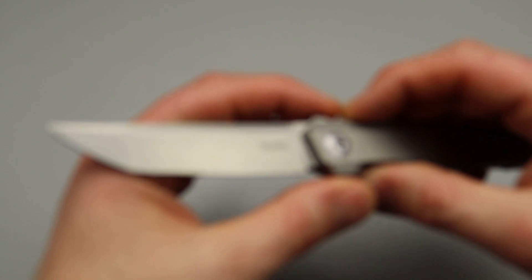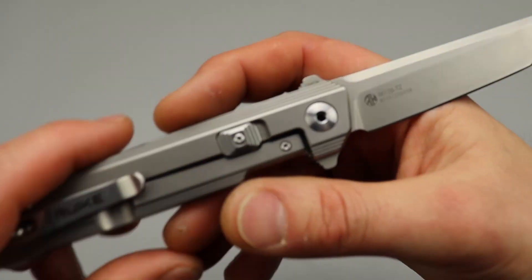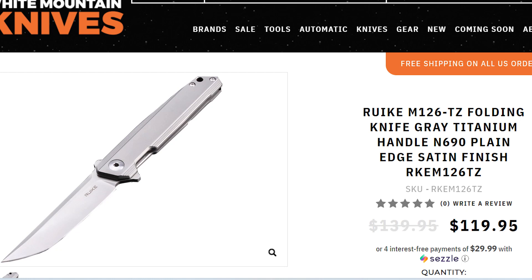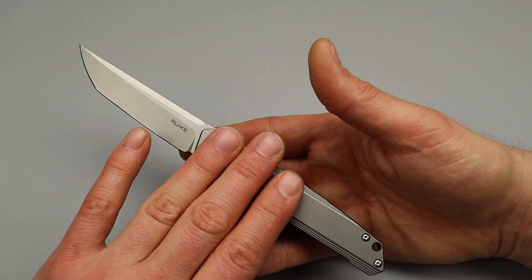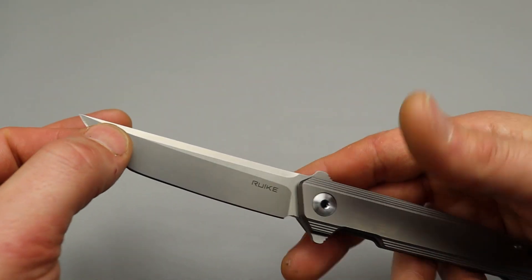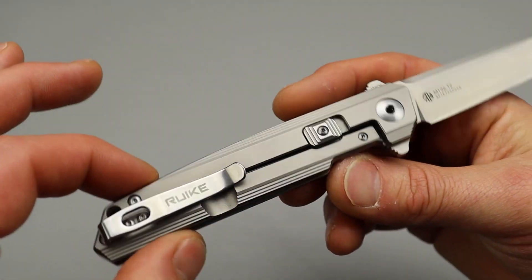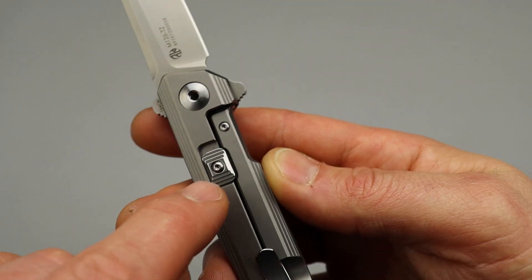Next, we have another Tanto. The Rake M126TZ. Now, I believe they have a budget version of this. But, this is the titanium version. We have 154CM blade steel. And, it has a titanium frame lock with a steel lock bar insert.